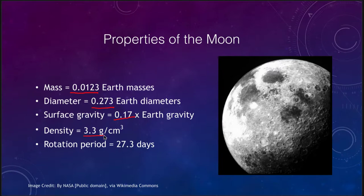The density of the moon is also a lot less than the earth's. The earth's is about five grams per cubic centimeter, while the density of the moon is about 3.3 grams per cubic centimeter, meaning it has a higher concentration of rock and a lower concentration of metals than the earth. Its rotational period is 27.3 days — that is how long it takes the moon to spin on its axis, and also how long it takes to orbit once around the earth, which is why one side of the moon always faces the earth.